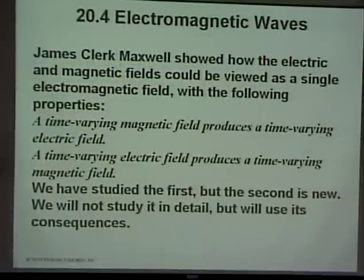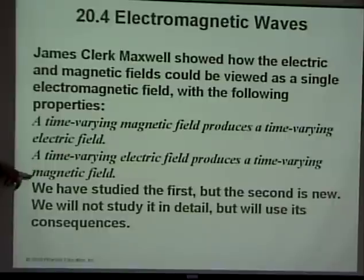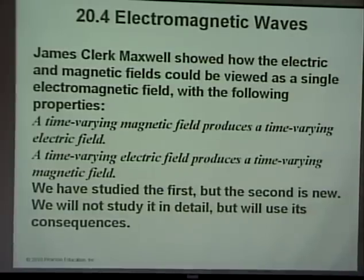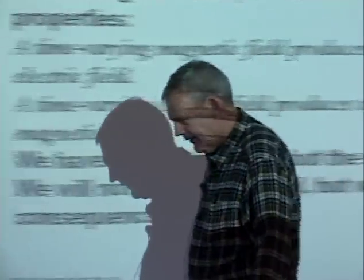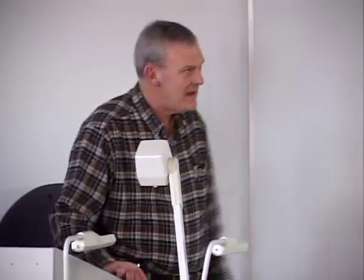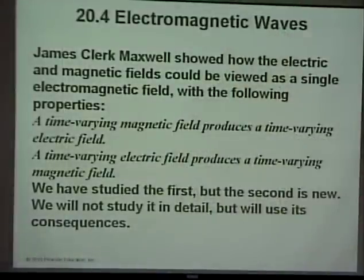A time-varying magnetic field produces a time-varying electric field, and vice versa — a time-varying electric field produces a time-varying magnetic field. This is the work of Maxwell, Faraday, Henry, and others from the 1800s. Even Ben Franklin deserves credit — the guy did everything, and he was one of the greatest American scientists.